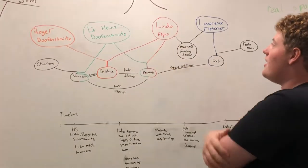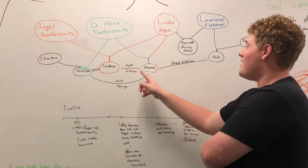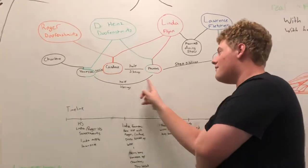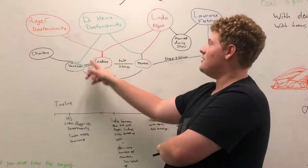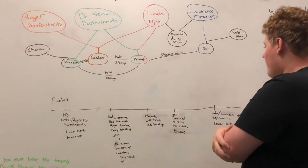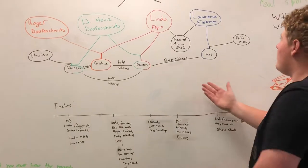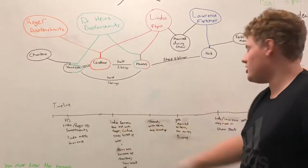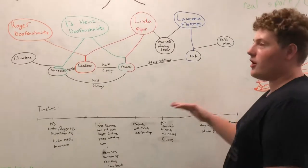Linda and Dr. Hines Doofenshmirtz are Phineas' parents. This would make Candace and Phineas half-siblings, and Vanessa and Phineas half-siblings. Also making Candace and Vanessa cousins through Dr. Hines and Roger, who are brothers. After that, they get divorced, so they're no longer together. Linda gets back in touch with Lawrence, who she met in high school, as he was the exchange student.